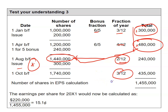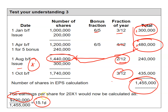So here is my weighted average EPS figure. With profits after tax of $220,000 and a weighted figure of 1.455 million shares, I have an earnings per share of 15.1 cents. The key issue is: use the bonus fraction up to the date of the bonus issue, then stop. Stop at the bonus issue date and just treat the full shares you have, weighting them from then on — whether you have a new market issue or not. Stop at the bonus date and you're fine.